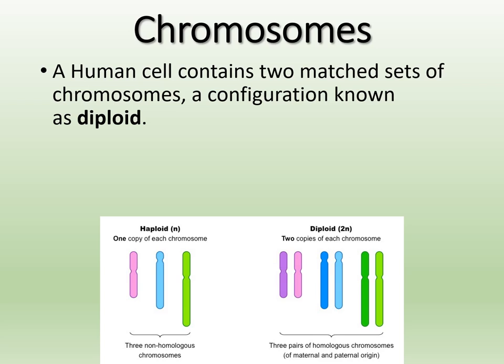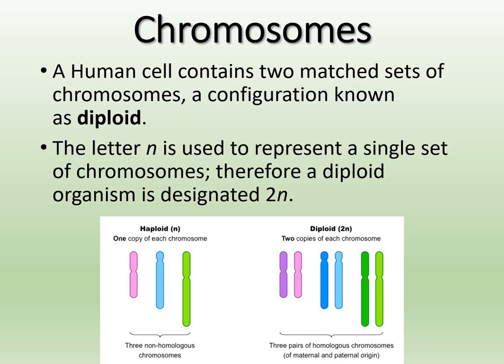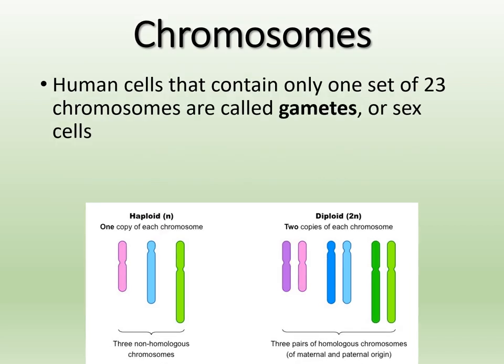When chromosomes are paired up together in matching sets, that configuration is known as diploid. We use the letter N to represent a single set of chromosomes, so a diploid organism is 2N. If you have only one copy of each chromosome, that's haploid. Haploid really only happens during reproduction, and we'll talk more about haploid when we discuss meiosis. When you pair them up and have two copies of each chromosome, you have a diploid set — 2N.